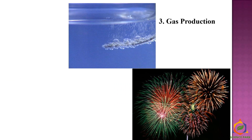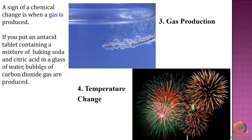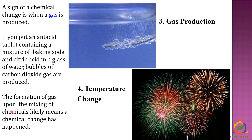The next signs are gas production and temperature change. In fireworks, when the reaction happens, the temperature changes. A sign of a chemical change is when a gas is produced. You can do this reaction at home: take water in a cup, add baking soda and citric acid, then add an antacid tablet like Eno. Bubbles of carbon dioxide gas will be produced — this is a chemical change. Formation of gas upon mixing of chemicals likely means a chemical change has happened.